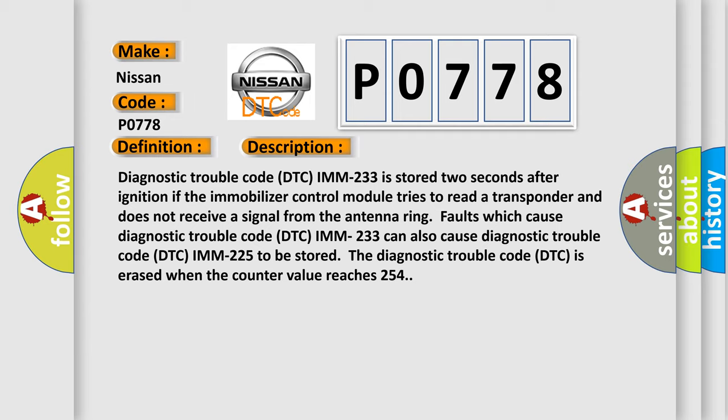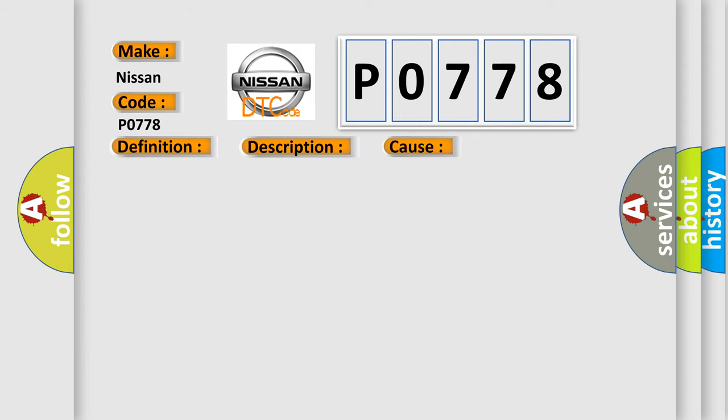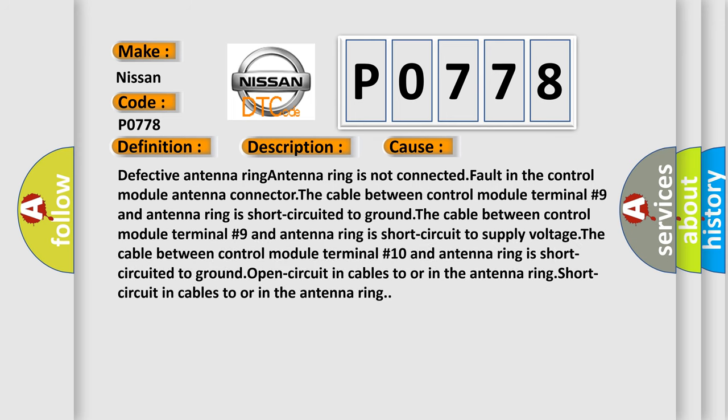This diagnostic error occurs most often in these cases: Defective antenna ring; antenna ring is not connected; fault in the control module antenna connector; the cable between control module terminal number 9 and antenna ring is short circuited to ground; the cable between control module terminal number 9 and antenna ring is short circuit to supply voltage; the cable between control module terminal number 10 and antenna ring is short circuited to ground; open circuit in cables to or in the antenna ring; short circuit in cables to or in the antenna ring.